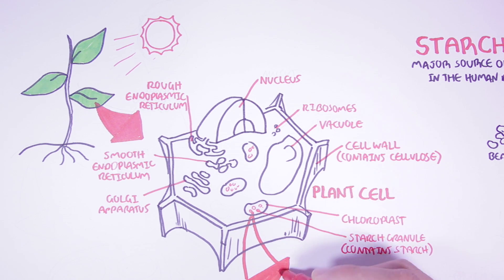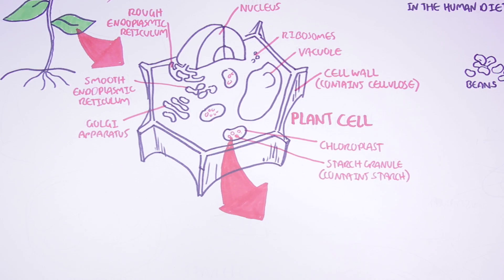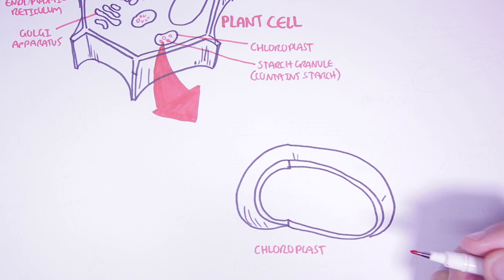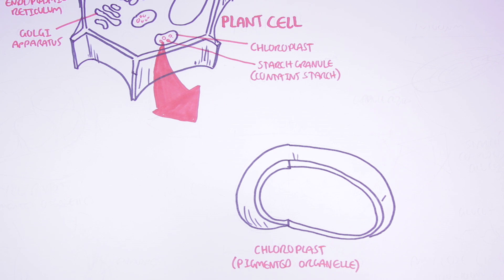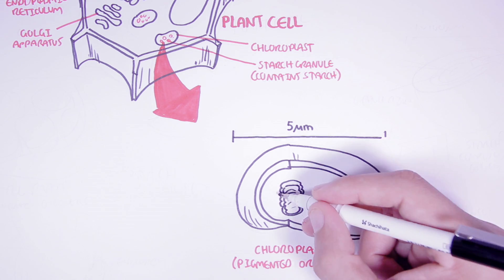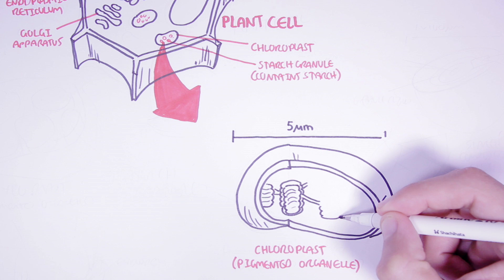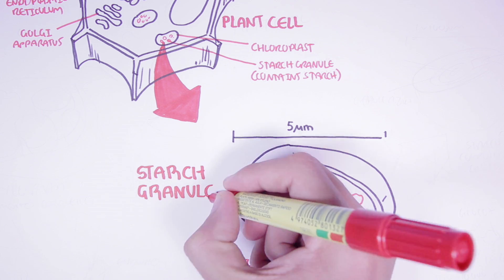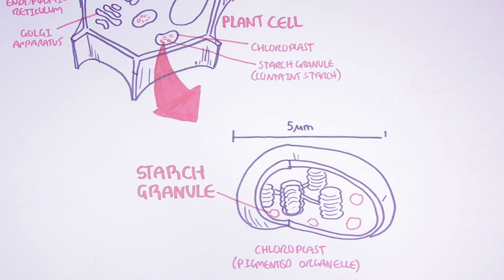Let's have a closer look at the chloroplast. A chloroplast is a pigmented organelle because it participates in photosynthesis and therefore contains color. Chloroplasts are about 5 micrometers in diameter, though the size can vary depending on the plant. Chloroplasts contain thylakoids and structures related to photosynthesis, but within the chloroplast you can find starch granules — the starch granules are where starch is located.